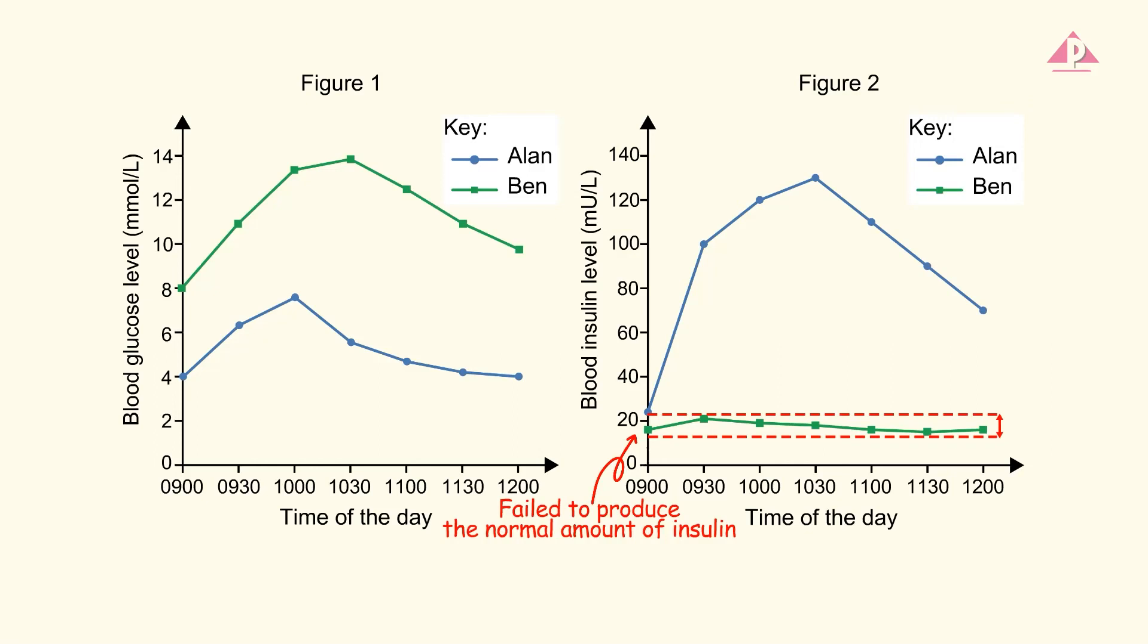Hence, we can deduce that Ben suffers from insulin-dependent diabetes or type 1 diabetes. Bear in mind that we may need to integrate information from different graphs to obtain enough evidence when we make deductions.